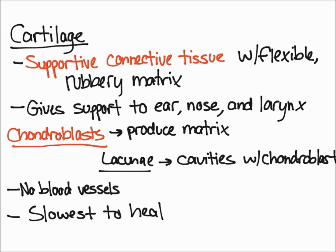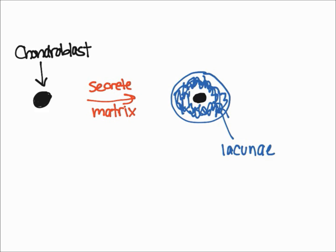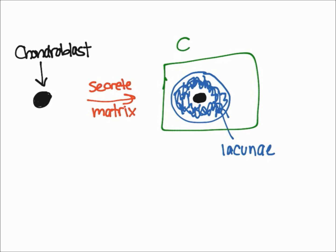Let me draw you a picture to clarify the chondroblast and chondrocyte thing, because I know it can be a little confusing. We'll start with that black little ball and call that the chondroblast. It's going to produce and secrete the matrix, essentially surrounding itself with it. Now it becomes trapped in these little cavities called lacunae, and the combination — the lacunae plus the chondroblast — is called the chondrocyte.